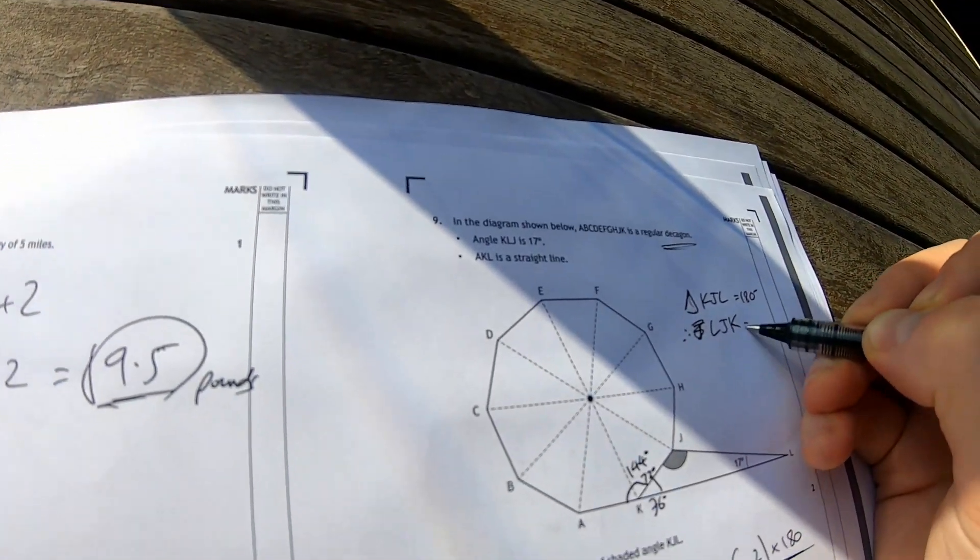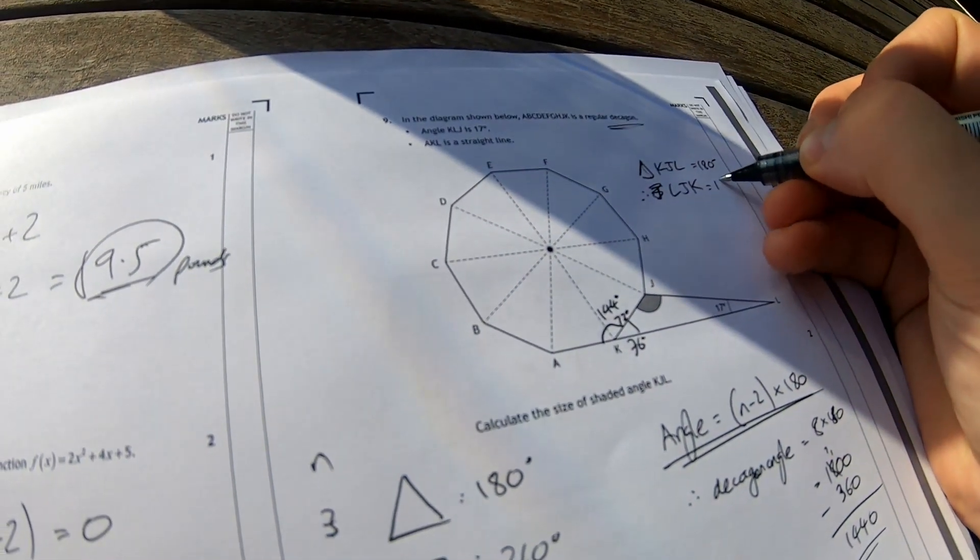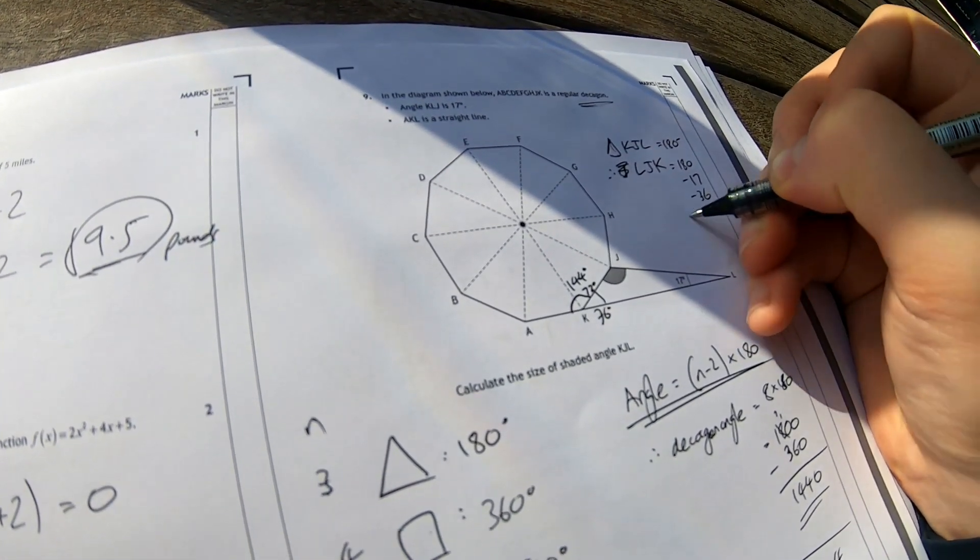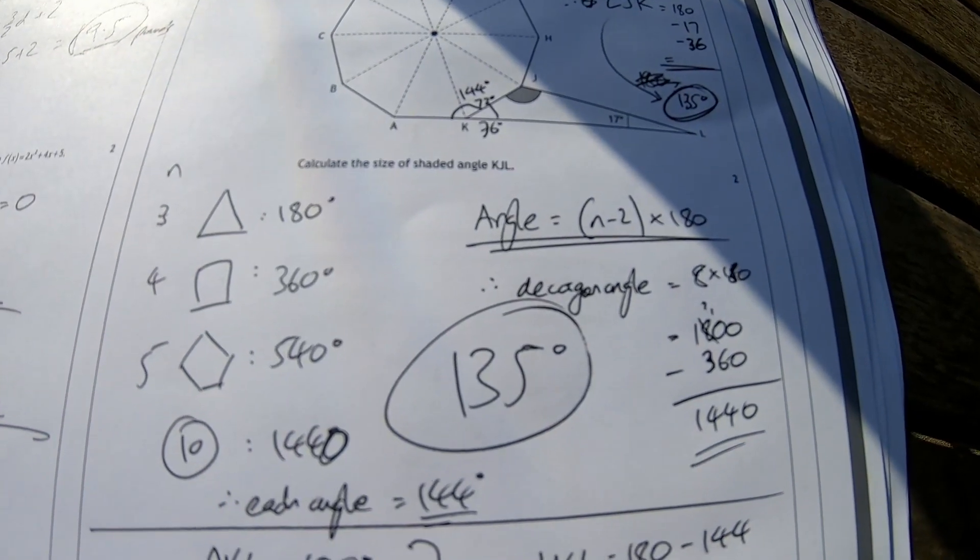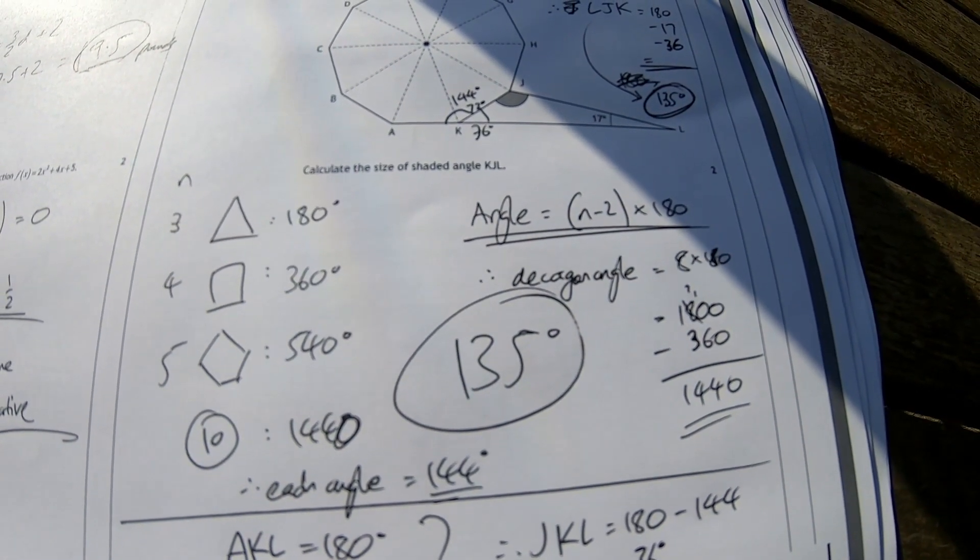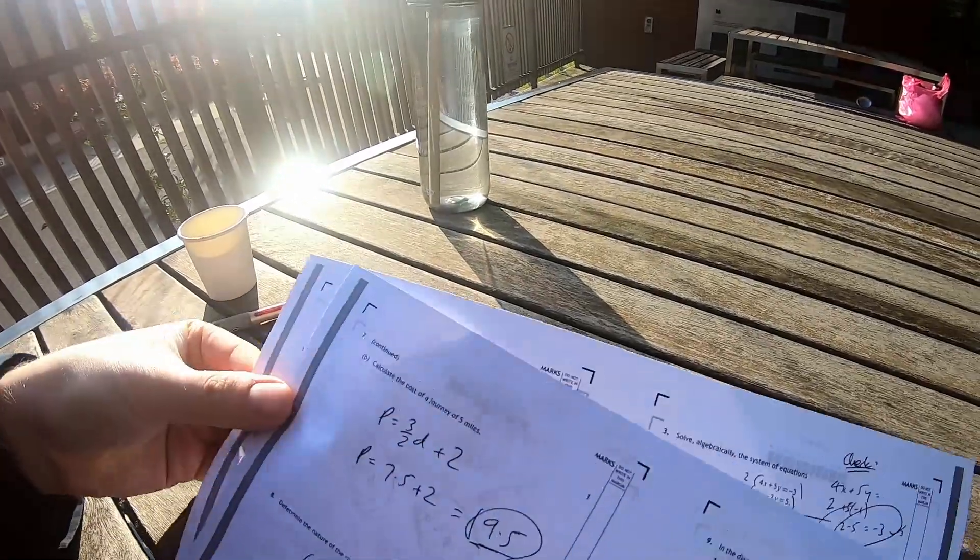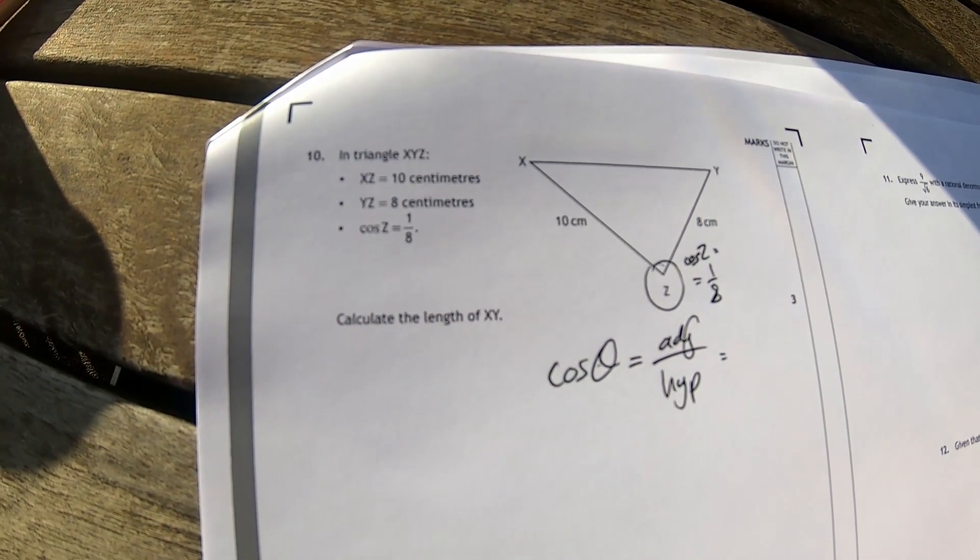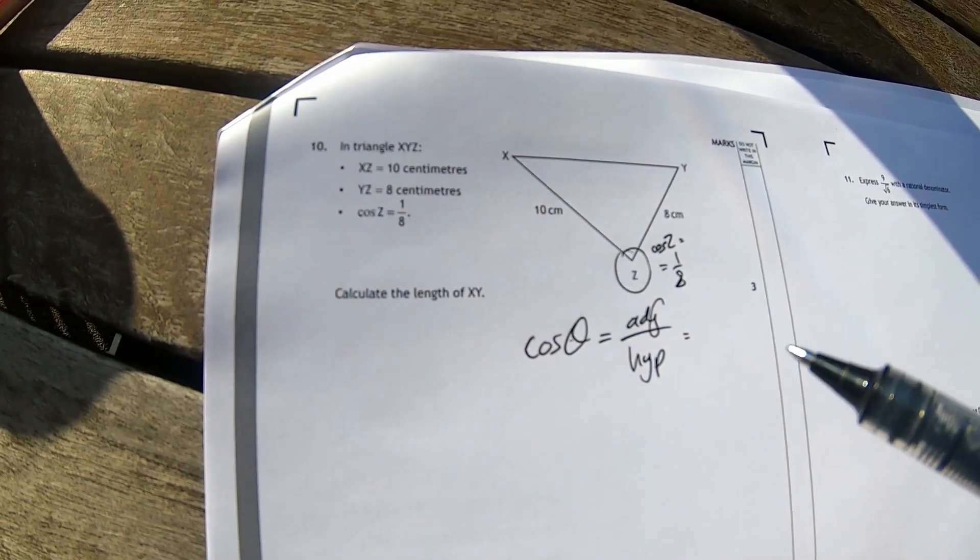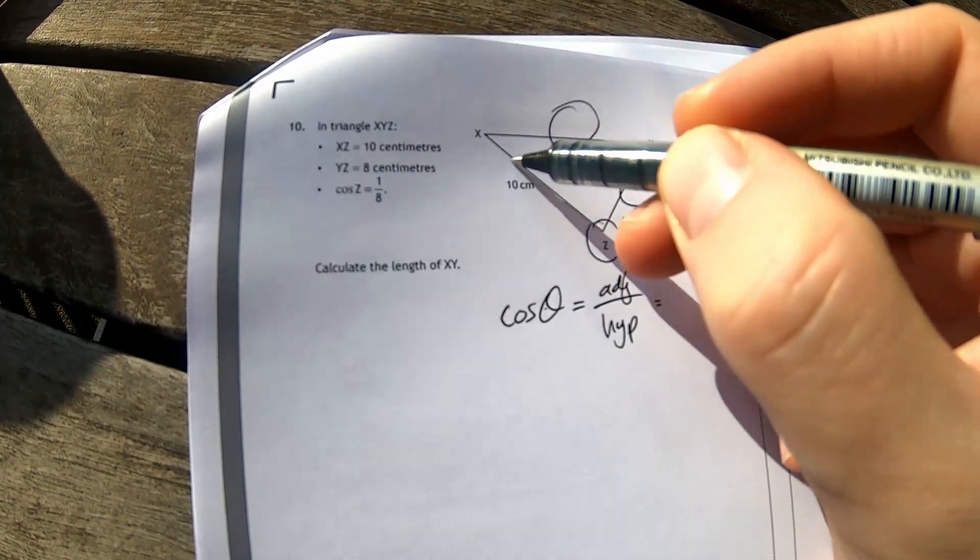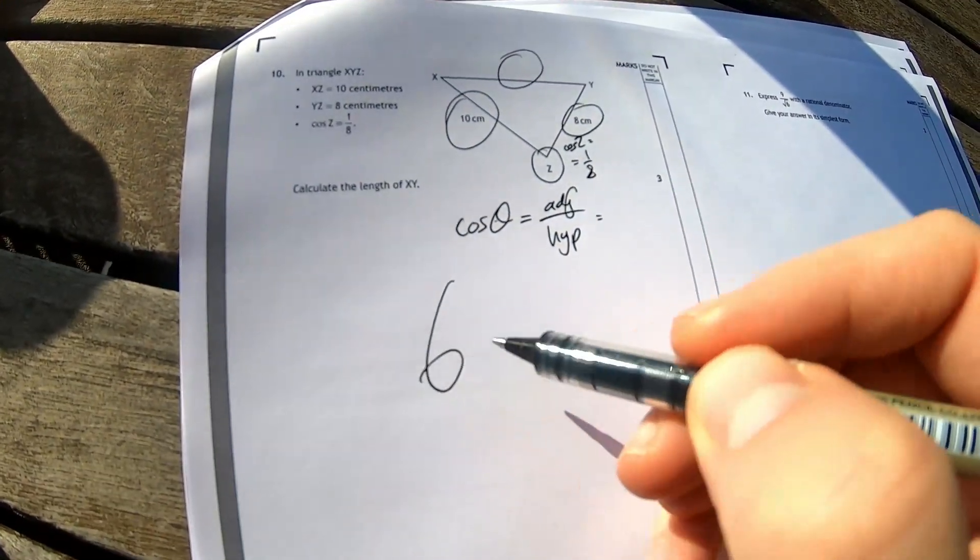L, J, K must equal 180 minus 17 minus 36. 135 degrees. Looks about right. I just realized I don't even need trigonometry to solve this trigonometry question because they've given me a three, four, five triangle. The answer is six.